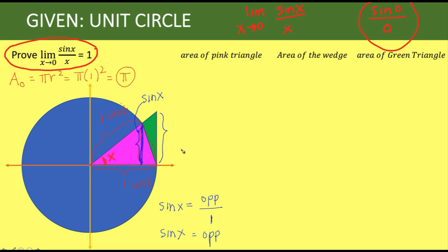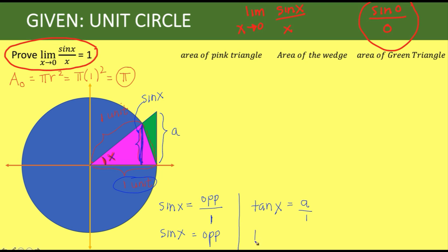Next, what is this other height? Let's call it a. Using trigonometry again, tangent of x equals the opposite over the adjacent side. The opposite is a and the adjacent side is 1 unit, so a equals tangent of x. Therefore this length is tangent of x.